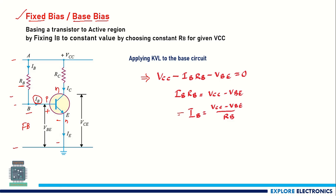This is the base DC current we are going to set and fix for the biasing. It depends on VCC (a constant DC power supply) minus VBE, which is typically 0.7 volts for a silicon transistor, divided by RB — the resistance we choose. That is how we fix IB.